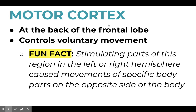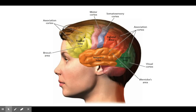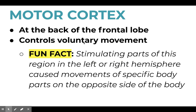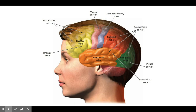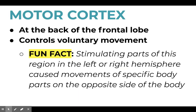First we have the motor cortex, which makes sense that it helps with voluntary movement. And it's at the back of our frontal lobe. So the motor cortex, you can see, is right here. It deals with voluntary movement — meaning the movement that we're thinking about — which is why it's closer to the frontal lobe. The frontal lobe is the most advanced one, so that's why it's a little bit further up here. It's something that's evolved over time. A fun fact about this is that stimulating parts of this region in the left or right hemisphere causes movements of specific body parts on the opposite side of the body.